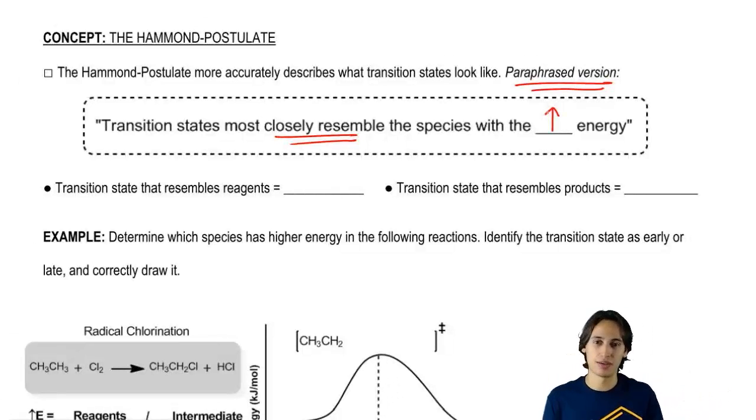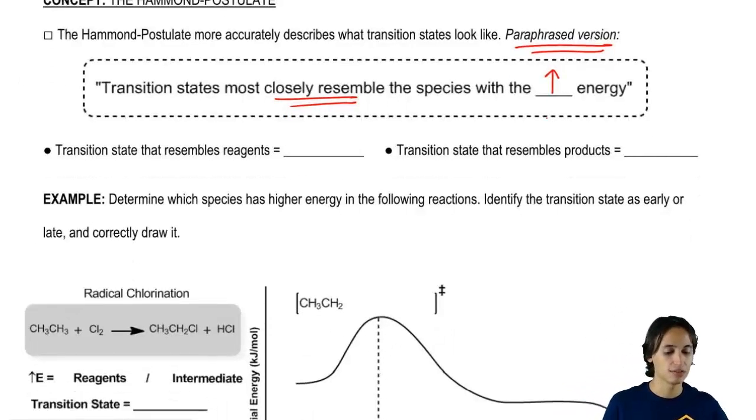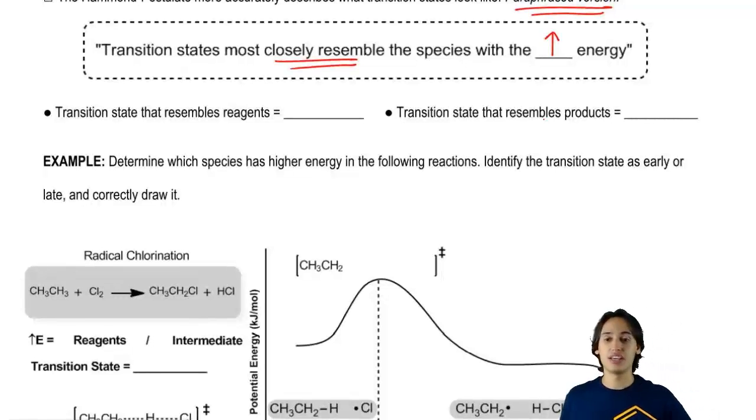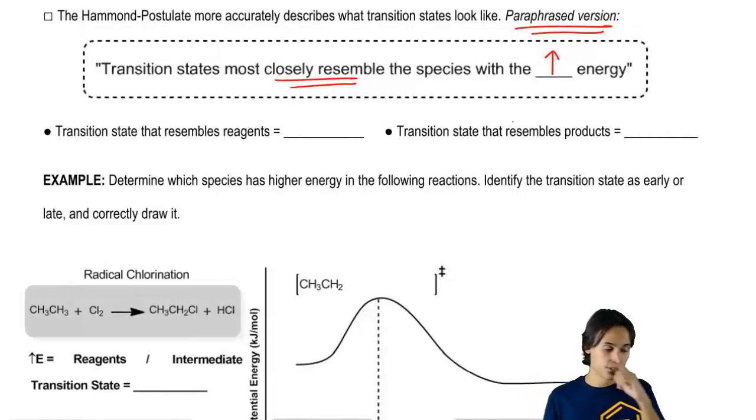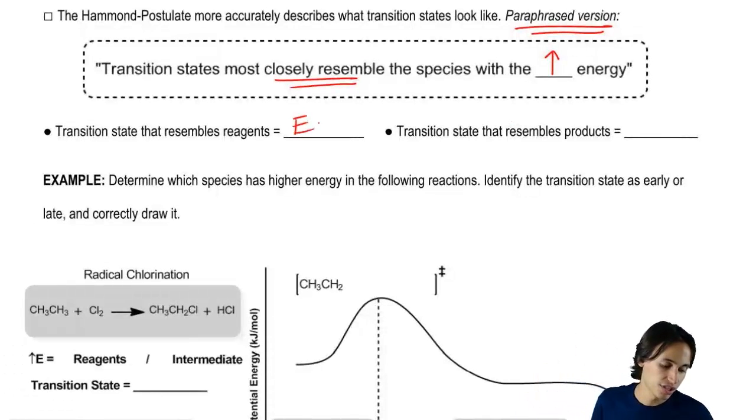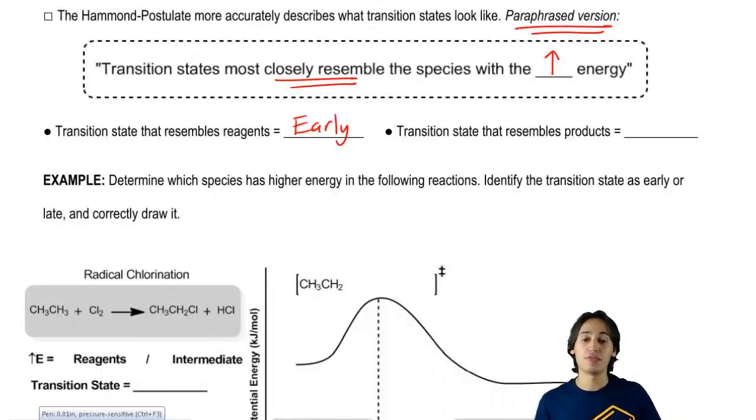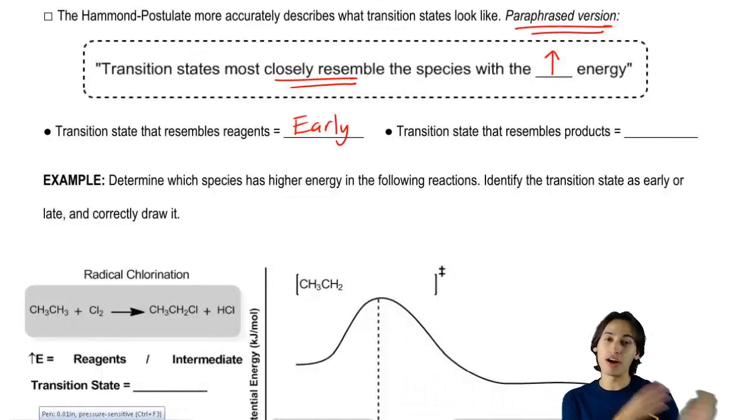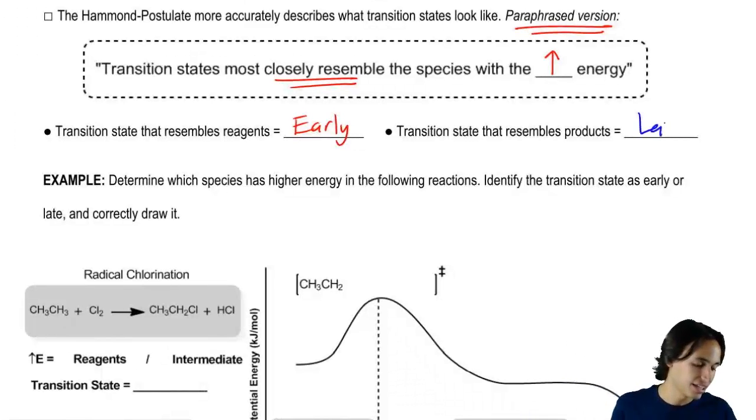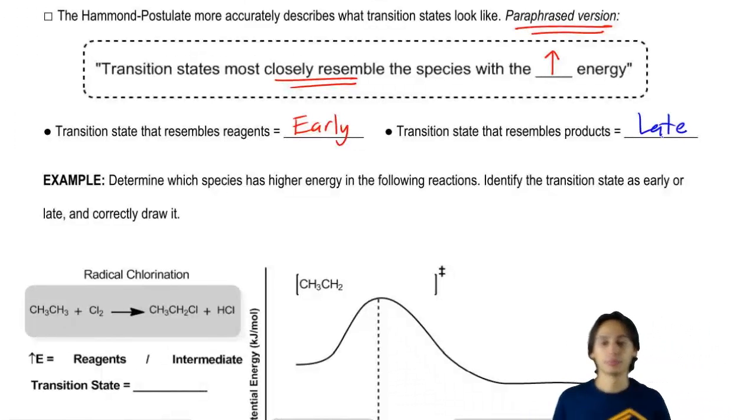And I'm going to show you guys what I mean by that in a second. If a transition state more closely resembles the reagents, we call that an early transition state. And if the transition state more resembles the products, then we call that a late transition state.